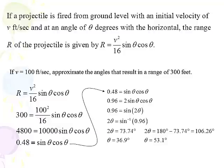There is 73.74° and 106.26°. So 2θ is set equal to both of those. I divide both sides by 2 and I get two answers: θ = 36.9° and θ = 53.1°.